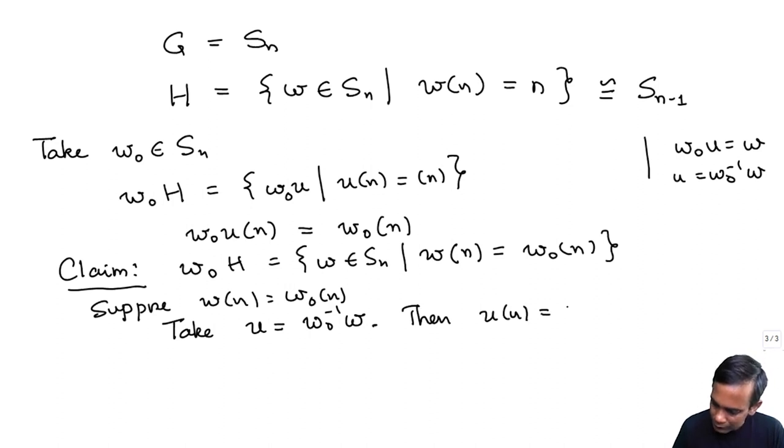Then what is U of N? U of N is W0 inverse W of N, but we know that W of N is W0 of N. So that shows that the coset W0 H is just the set of all elements of SN which take N to W0 N.